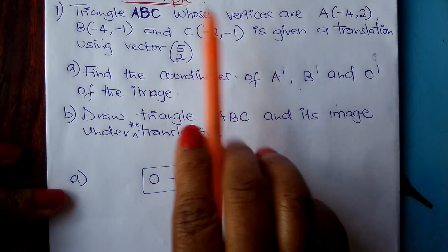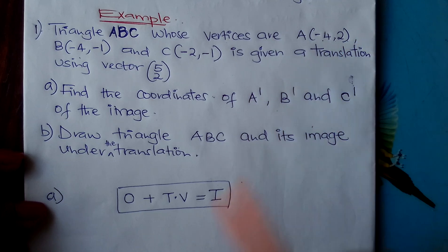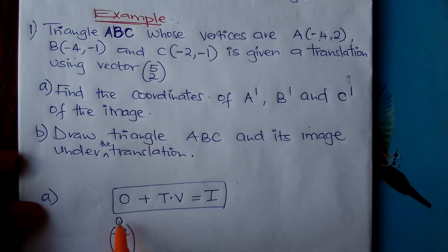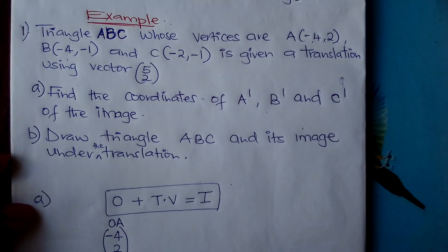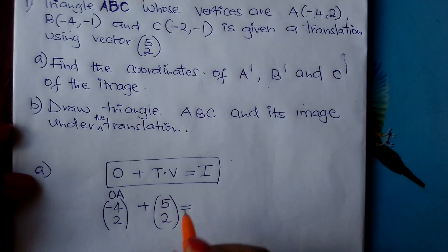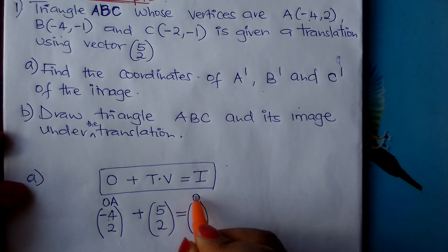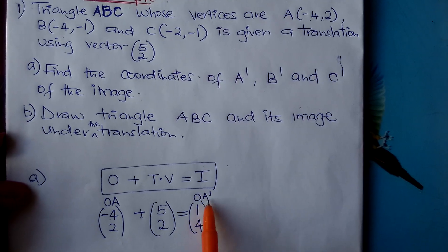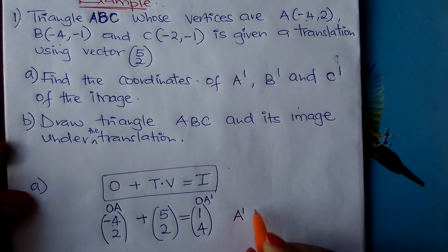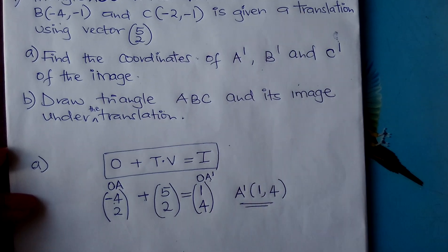The points of the object are A, B and C. For point A, which is at (-4, 2), we write it as the position vector OA = (-4, 2). You add the translation vector (5, -2). Negative 4 plus 5 gives you 1, and 2 plus 2 gives you 4. This is OA', the position vector of A'. Therefore A' is at (1, 4).